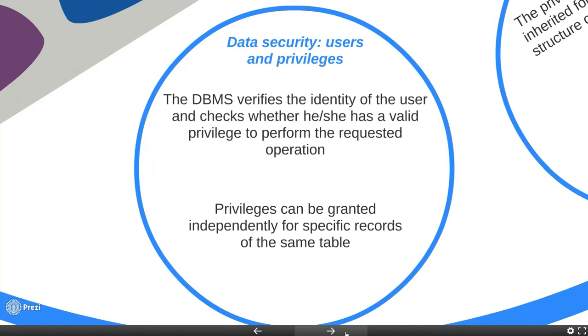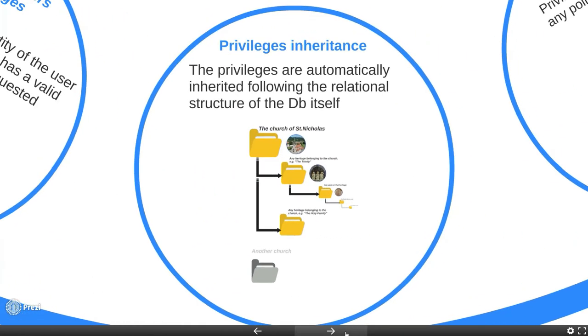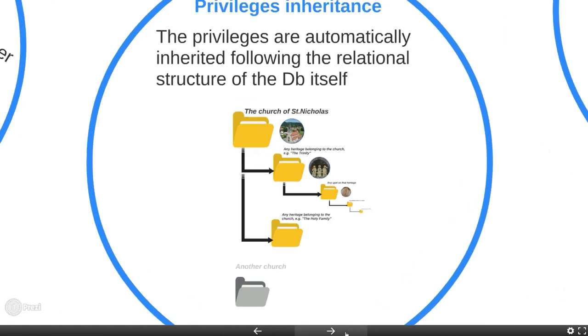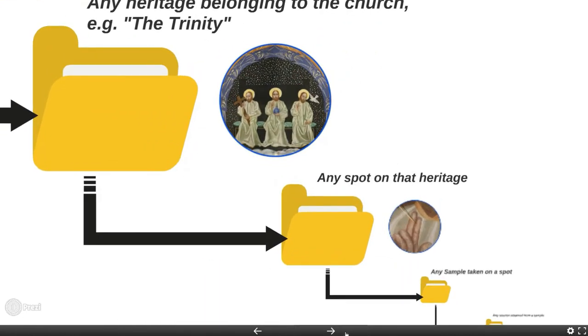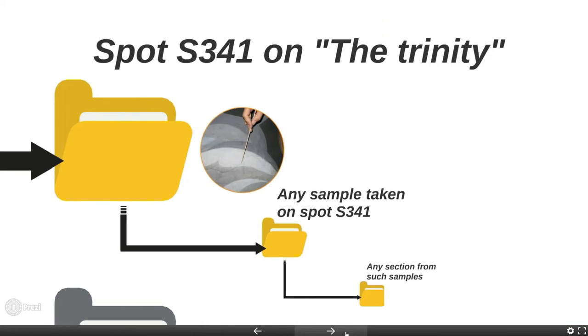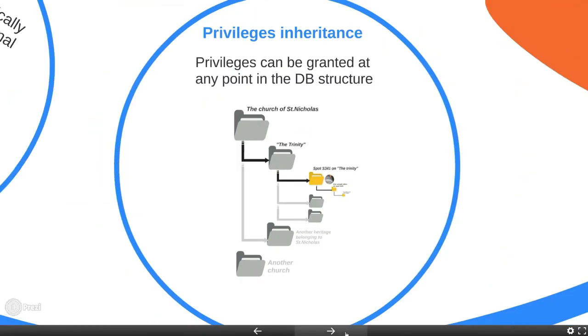It is possible to grant different privileges for each single record of the same table. Privileges granted on a parent record are inherited for child records. As an example, someone who is authorized to modify an entity will be able to modify anything that derives from it. Privileges can be granted on any node of the hierarchical structure, thus making it possible to let someone work safely only on specific areas.